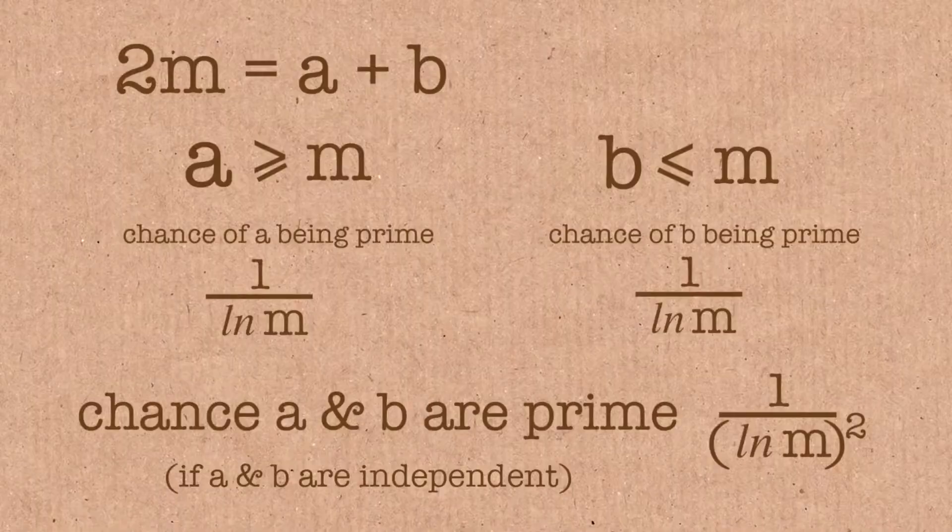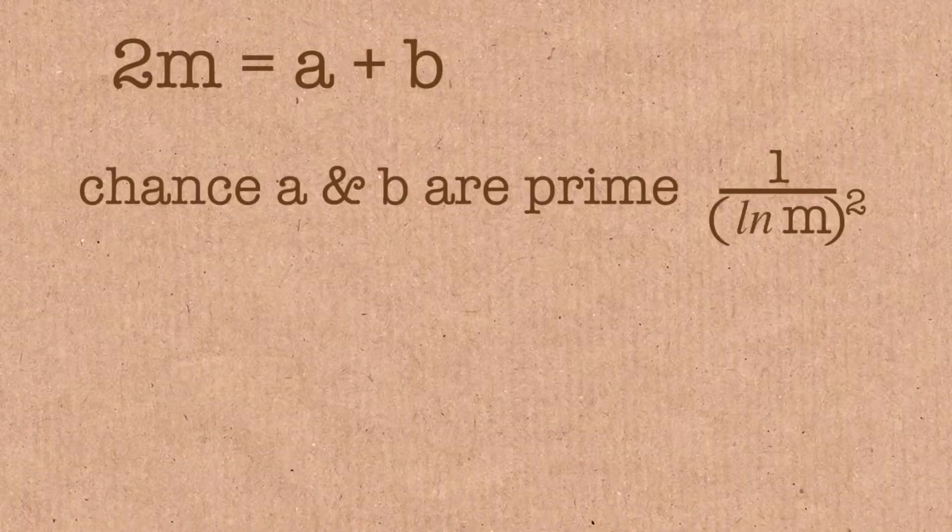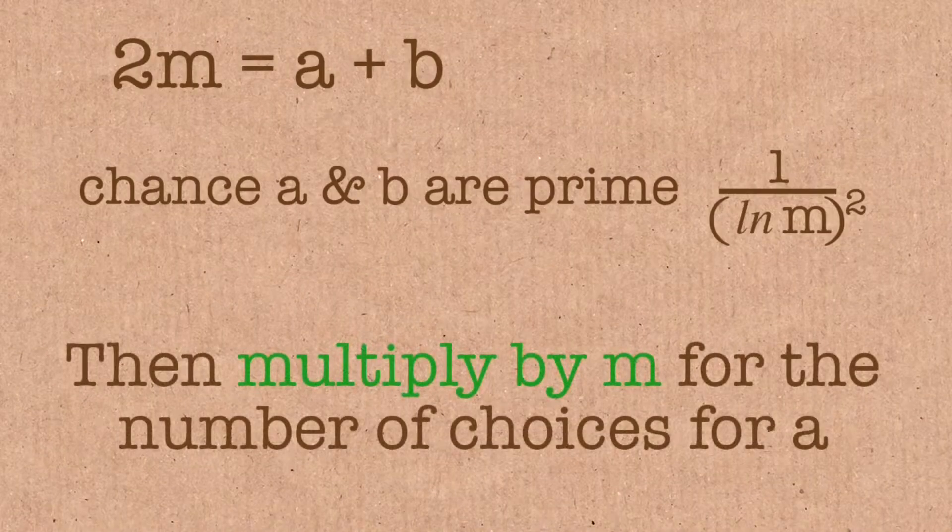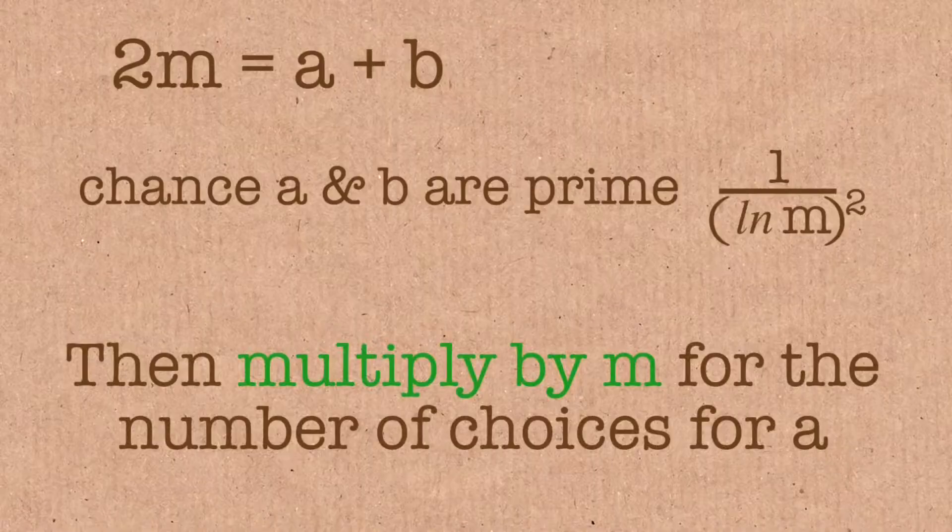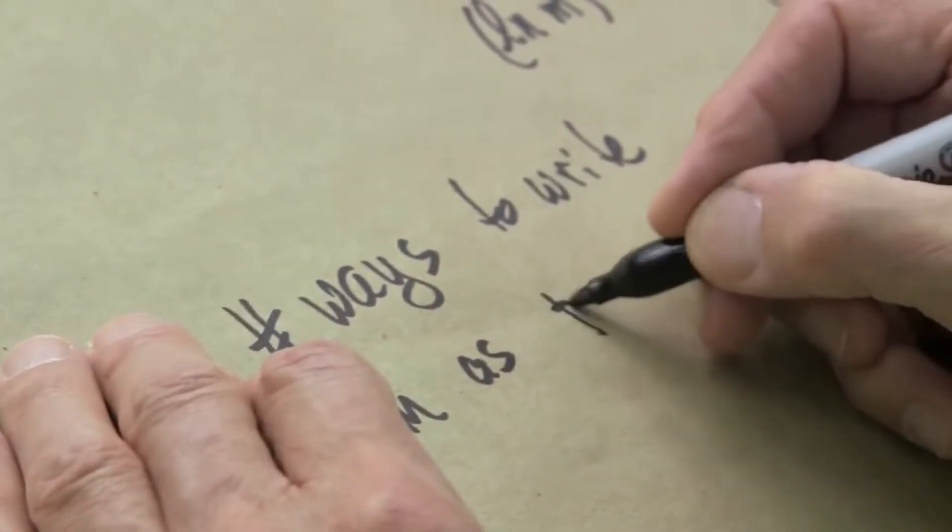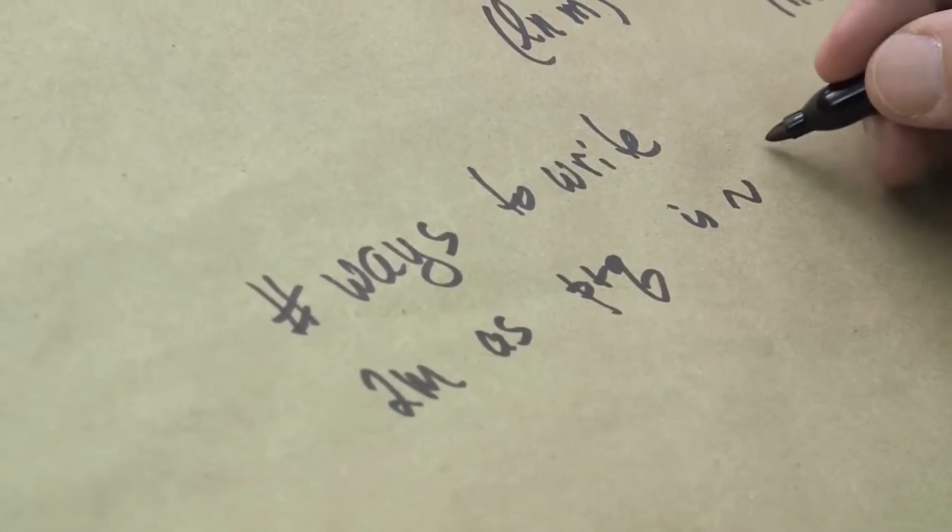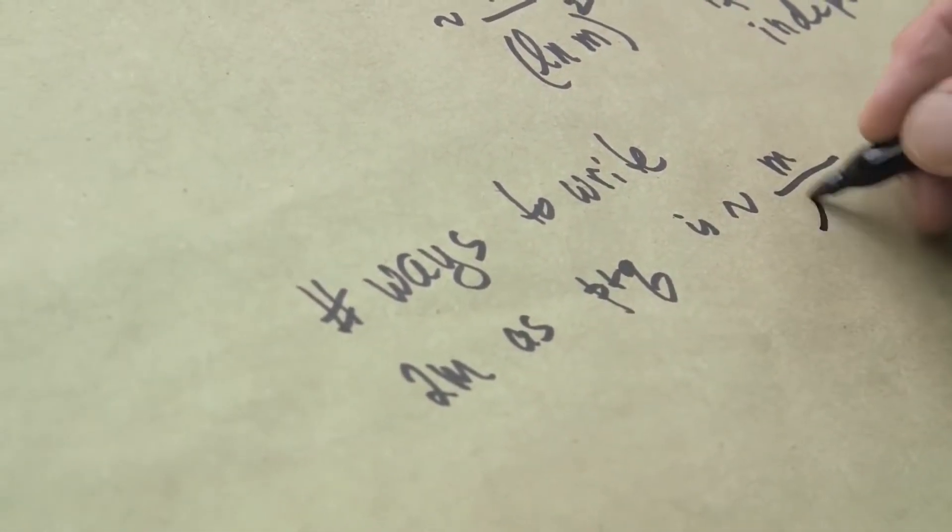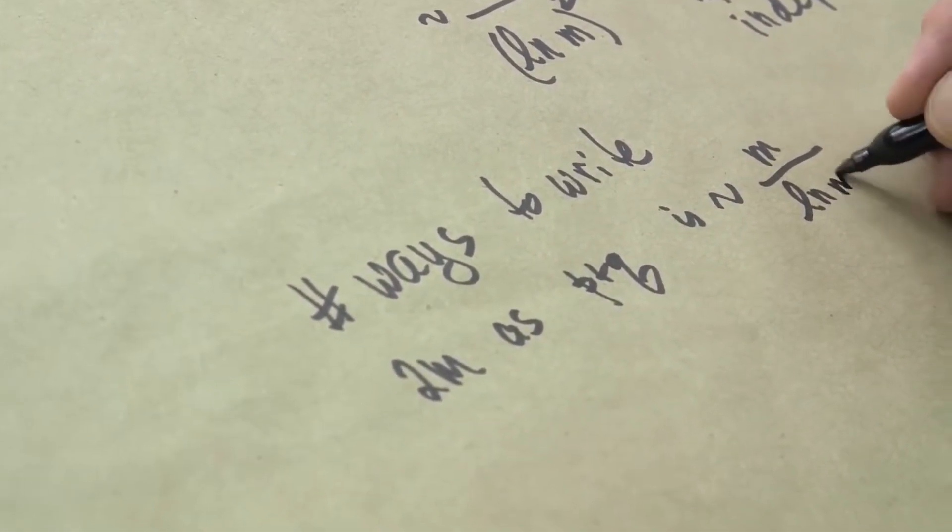How many chances do we get? To compute this probability, we had to choose an a between m and 2m. So there are m choices. Number of ways to write 2m as p plus q is about equal to m divided by the log of m squared.